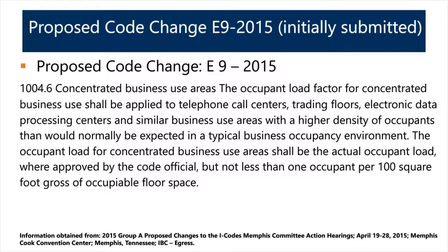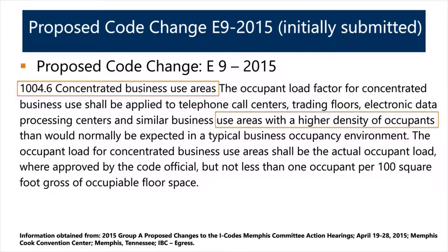The actual code change submitted was E9-215. It struck out the 100 square foot office occupant load factor and inserted 150 gross, while adding an entirely new function of space called 'concentrated business use areas' — a subset of business use. A new Section 1004.6 was created, referencing areas like call centers and trading floors — defined as areas with higher density of occupants than the standard 150 — but not less than one per 100.